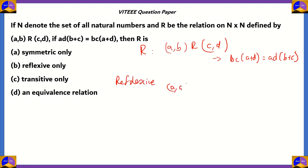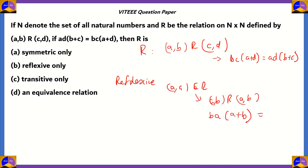For reflexivity, (a,b) should be related with (a,b). On the left-hand side, bc(a+d) becomes ba(a+b), and on the right-hand side, ad(b+c) becomes ab(b+a). Since addition and multiplication are commutative, the order doesn't matter — both sides are identical. Therefore, the relation R is reflexive, making option B potentially correct.